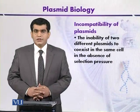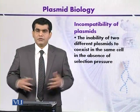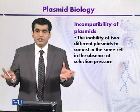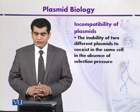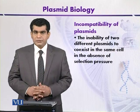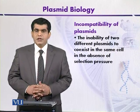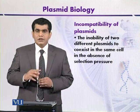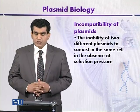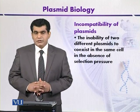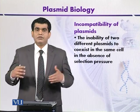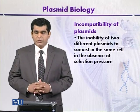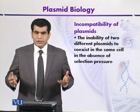Another factor that is very important when we attempt gene cloning by using two different types of plasmids is incompatibility. When we attempt to introduce two different plasmids, they will not live together. The inability of two plasmids to co-exist in the same cell is called incompatibility of the plasmids.